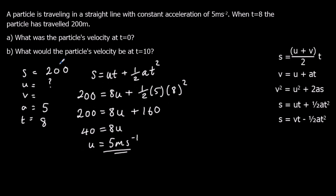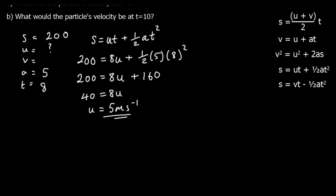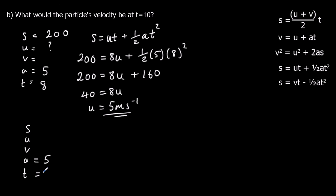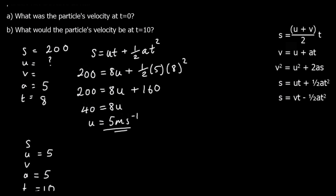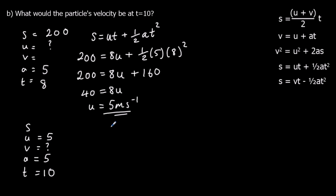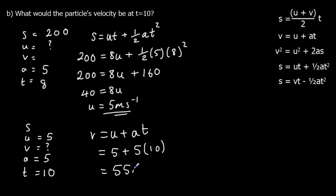Part B: what would the particle's velocity be at T equals 10? We can no longer use the previous information because T is now 10, so the distance is no longer 200. A is still 5, T is 10, and initial velocity U is 5. We're working out V using V equals U plus AT: V equals 5 plus 5 times 10, which is 5 plus 50, giving 55 meters per second.